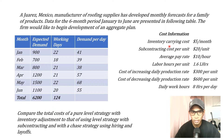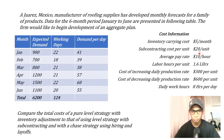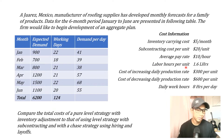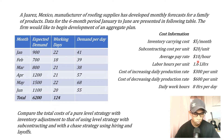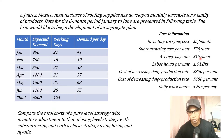We have some additional cost information. The inventory carrying cost is $5 per unit per month. The subcontracting cost per unit is $20 — if we're not manufacturing it ourselves and we're getting a third party to manufacture it, it costs $20 per unit. The average pay rate is $10 per hour and it takes 1.6 labor hours to manufacture one unit, so the internal production cost is $16 per unit.